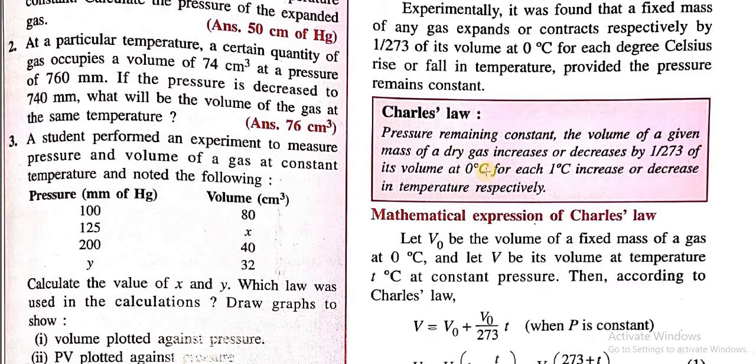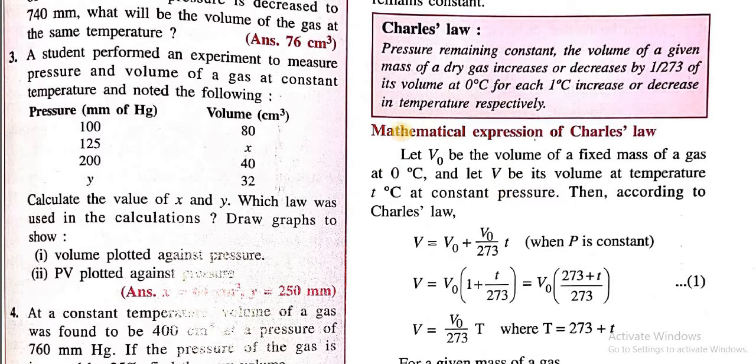Now, let us try to understand this statement with an example. Mathematical expression of Charles's Law. Let V₀ be the volume of a fixed mass of a gas at 0 degrees Celsius, and let capital V be its volume at temperature T degrees Celsius at constant pressure.